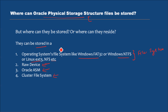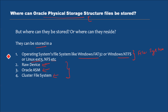When the files can be installed on a file system or raw device, there are some limitations I'll talk about later. For example, Oracle binaries when using a raw device still have to go on a file system. But the basic point is Oracle physical storage structure can be installed on four types of storage locations: one is operating system file system, second is raw device, third is Oracle ASM, and fourth is cluster file system.